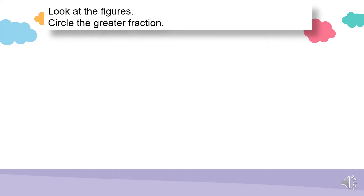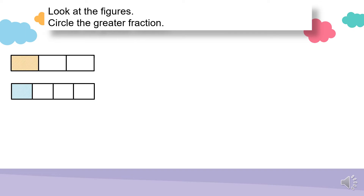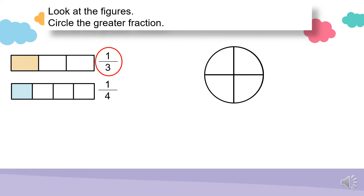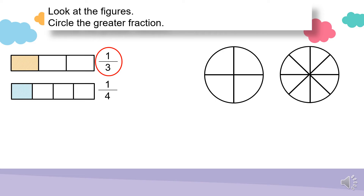Fraction strips can be very useful when comparing fractions with different denominators. Look at the figures and circle the greater fraction. You can see straight away that 1 over 3 is the greater fraction. Now let's look at the next example. These circles are of the same size, but the first circle is divided into 4 equal parts, so the denominator is going to be 4. The second circle is divided into 6 equal parts, so the denominator is going to be 6. In the first circle, 1 out of 4 parts is shaded, so the fraction is 1 over 4. In the second circle, 1 out of the 6 equal parts is shaded, so the fraction is 1 over 6. You can see straight away that 1 over 4 is shaded more, hence it is the greater fraction.